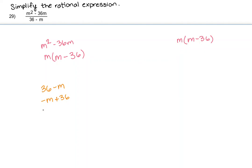So that tells me that I can actually factor out a negative 1, and that would leave me with a positive m and a negative 36. So the adjusted version of the denominator would be negative 1 times m minus 36.